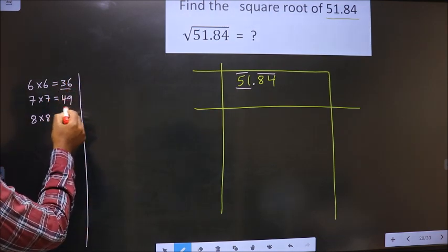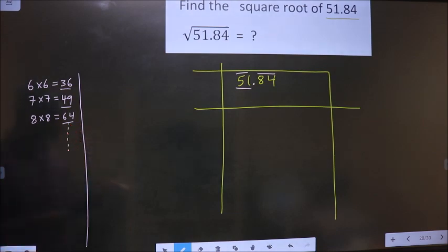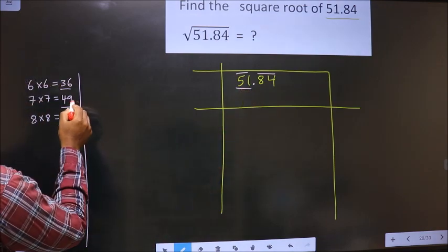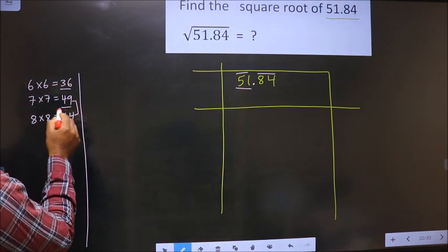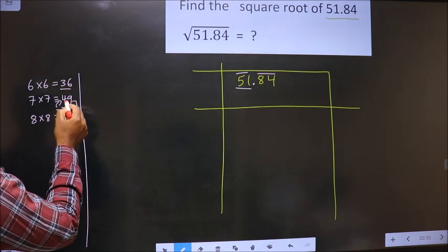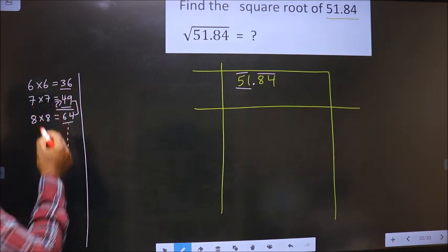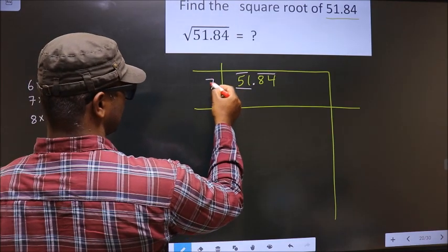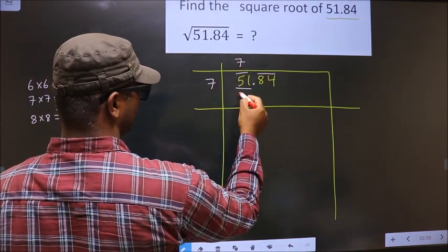These numbers are called perfect square numbers. Here we have 51. It lies between these two numbers. So we should take the smaller number that is 49. 49 is for 7 times 7. So 7 times 7 is 49.